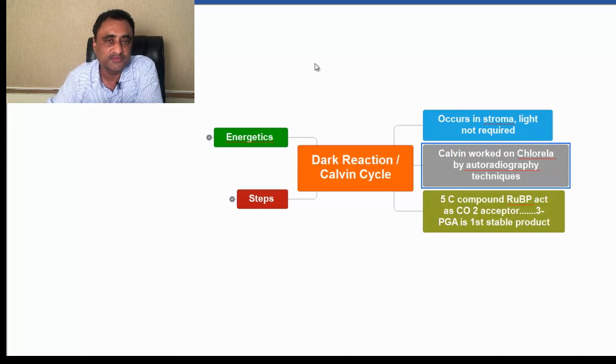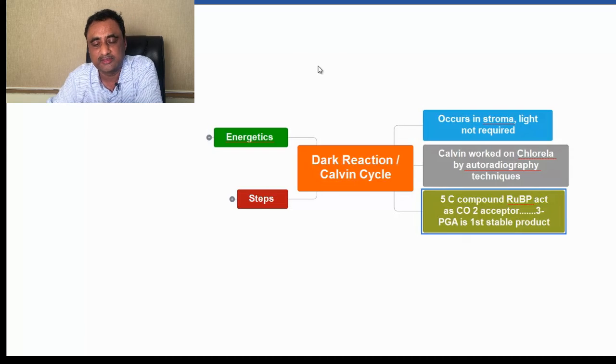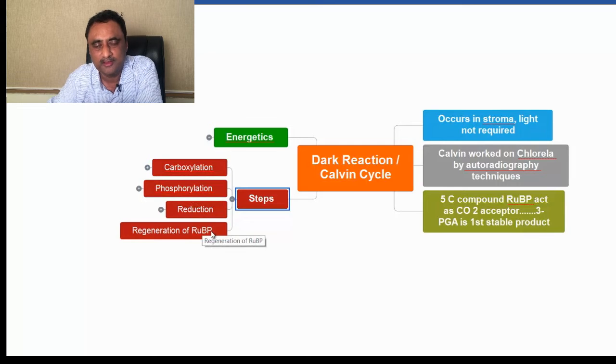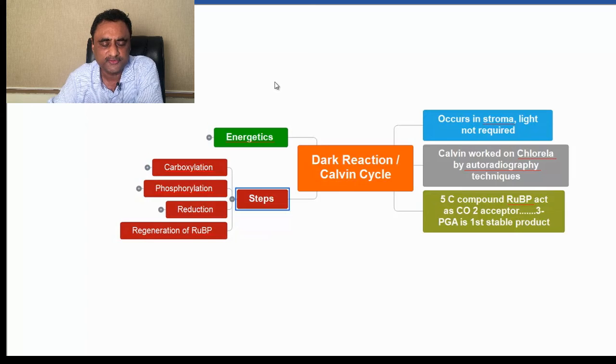For our convenience, we can divide the Calvin cycle into these steps: carboxylation, then phosphorylation, then reduction, followed by regeneration of RUBP. Let us learn the entire process in a simplistic manner.